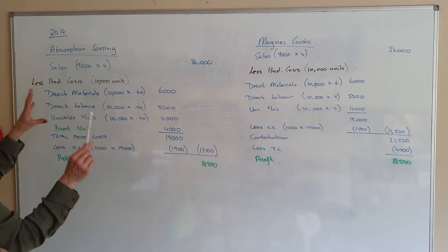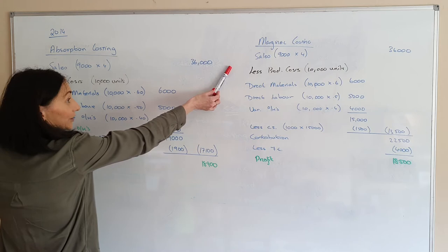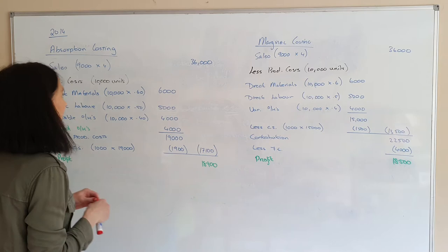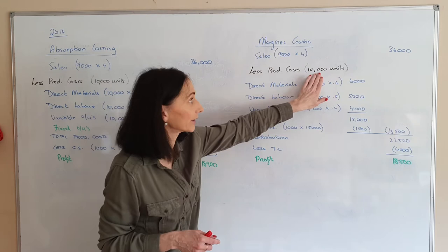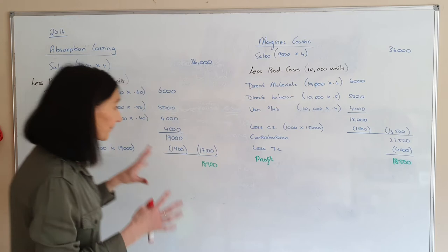In both statements, our sales are still 9,000 units, still selling them at €40 each, so we're taking in €36,000. Our production costs are based on producing 10,000 units — that's why I have 10,000 units here — while 9,000 is what was sold.